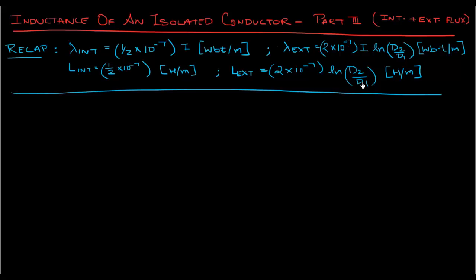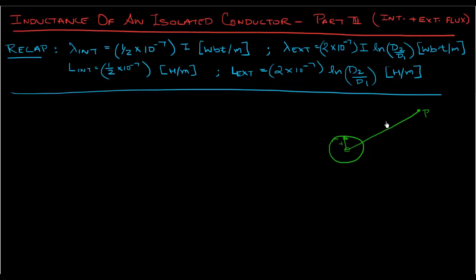In this video we'll combine these two. Looking at the cross-section of our cylindrical conductor, let's assume a point P at a distance d from the center of the conductor. We know the radius of our conductor is r, and this distance from the center to point P is d.